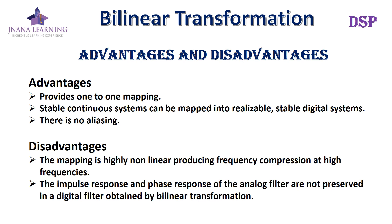The major advantages of bilinear transformation are: it provides one-to-one mapping, stable continuous systems can be mapped into realizable stable digital systems, and there is no aliasing or overlapping. The disadvantages are: the mapping is highly non-linear, producing frequency compression at high frequencies, and the impulse response and phase response of the analog filter are not preserved in the digital filter obtained by bilinear transformation.